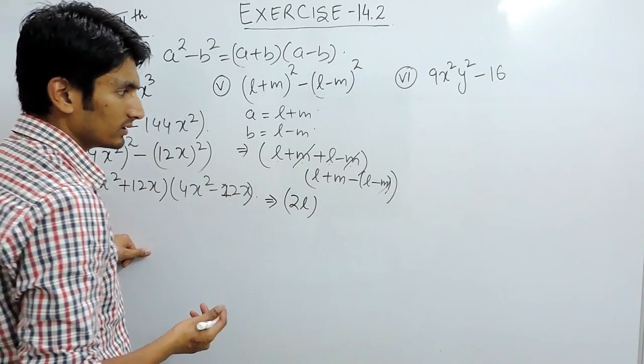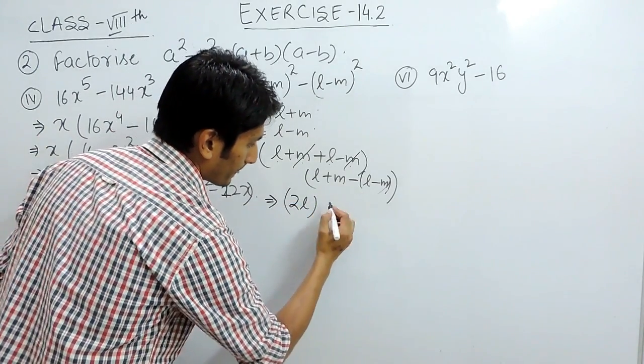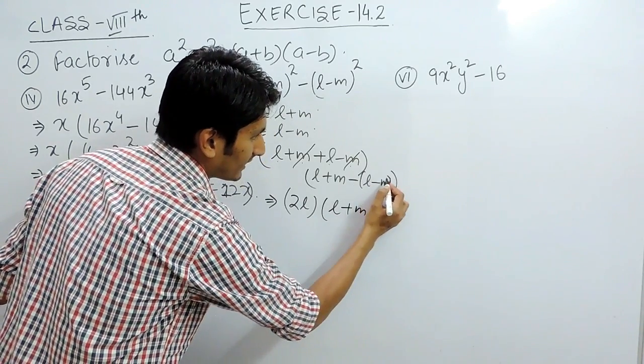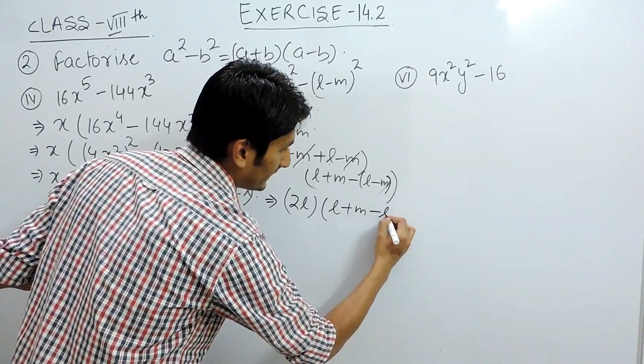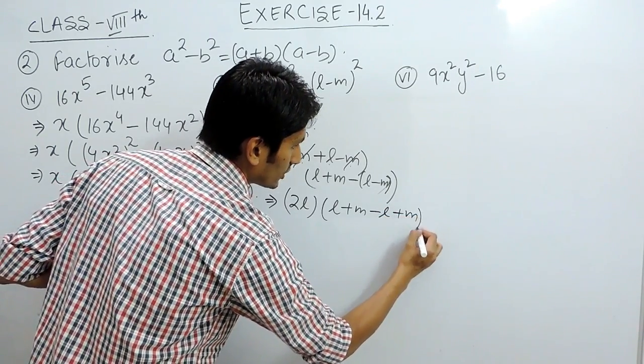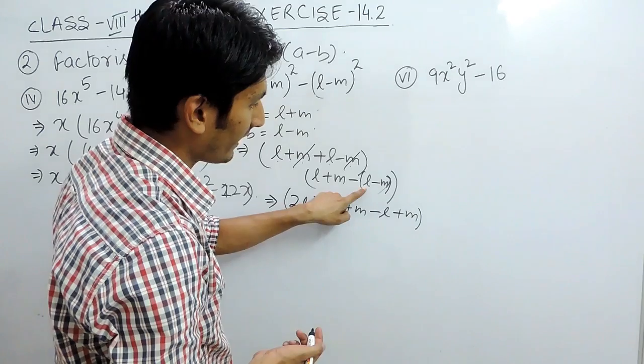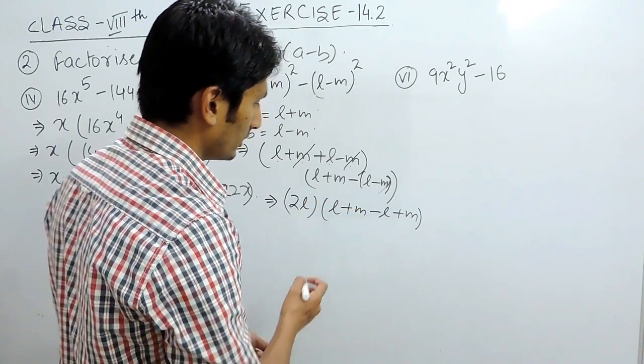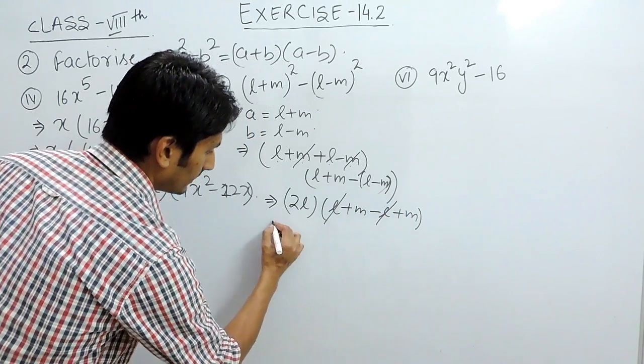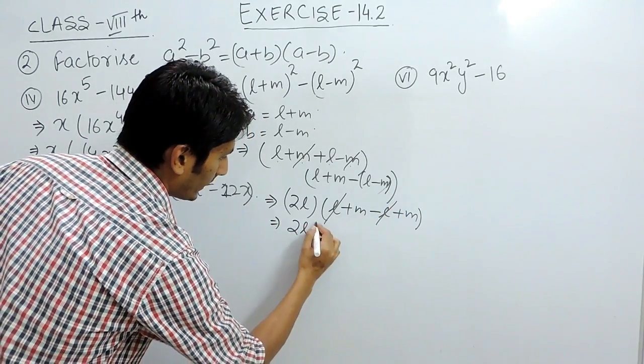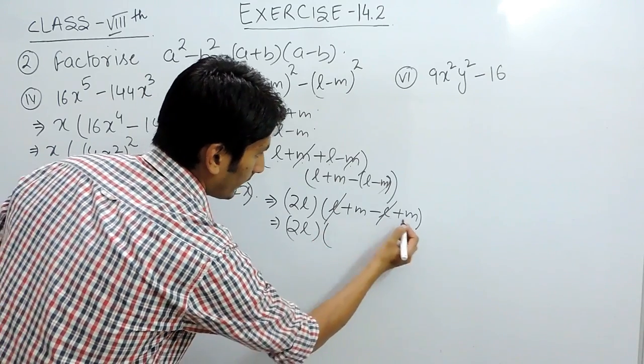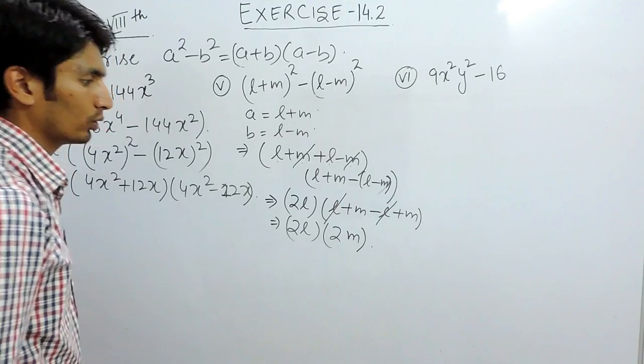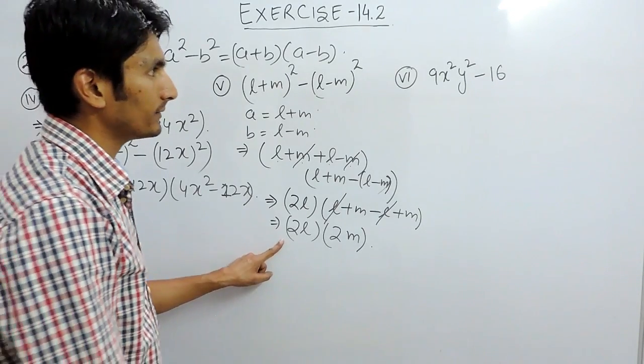In this, when there is a negative sign outside the bracket, the signs inside the bracket get changed. So this positive l becomes negative l and this negative becomes positive. This positive and negative cancel out, leaving 2m. So this will be 2l × 2m. This would be the answer for this part.